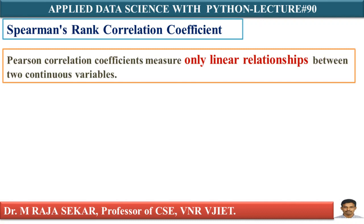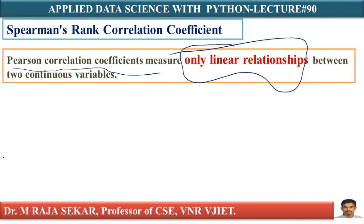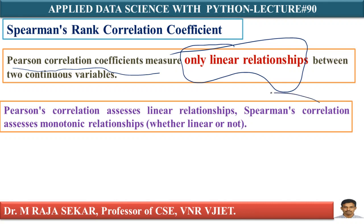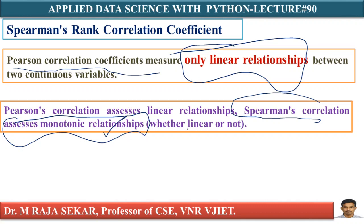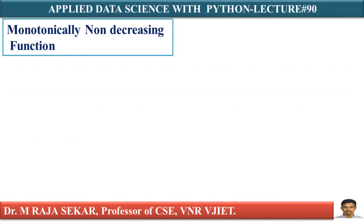As I discussed in my previous lecture, Pearson Correlation Coefficient measures only the linear relationship between two variables. Whereas in the case of Spearman's Rank Correlation Coefficient — this is Rank Correlation — it assesses monotonic relationships. A monotonic relationship may be linear or it may not be linear. First, we will try to understand what is a monotonically non-decreasing function.